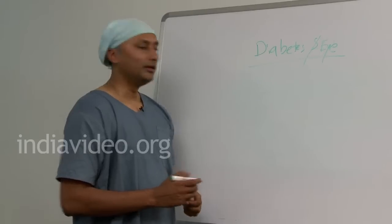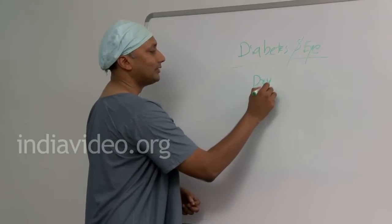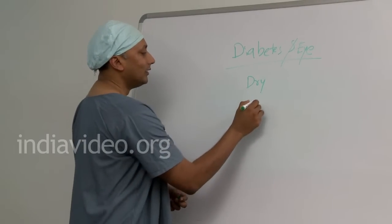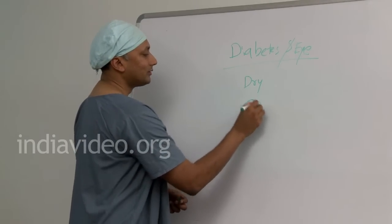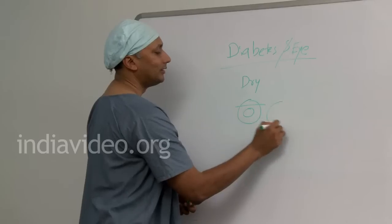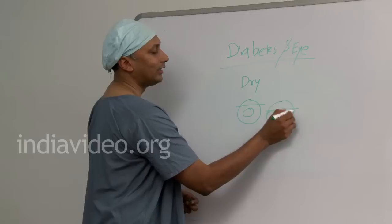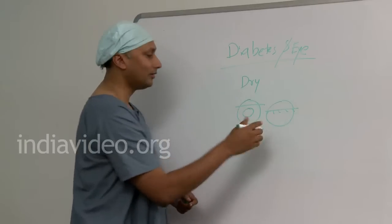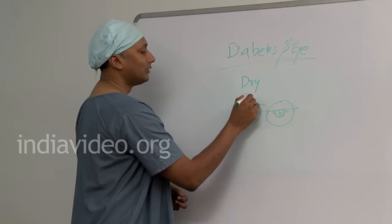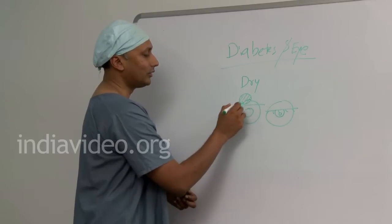Diabetes can affect your eyes in many ways. It can cause dryness, where there is a decrease in tear production inside the eye. It can cause lid problems — the eyelid normally sits at a certain level, but some people can have the eyelid at a lower level. It can also cause boils on the eyelid, called styes.